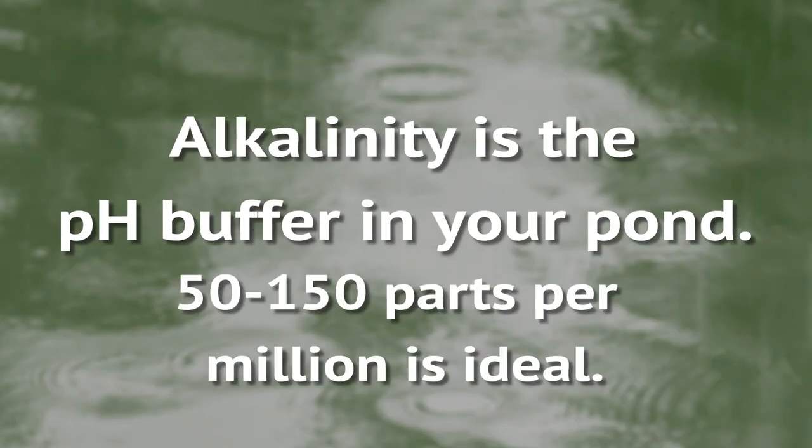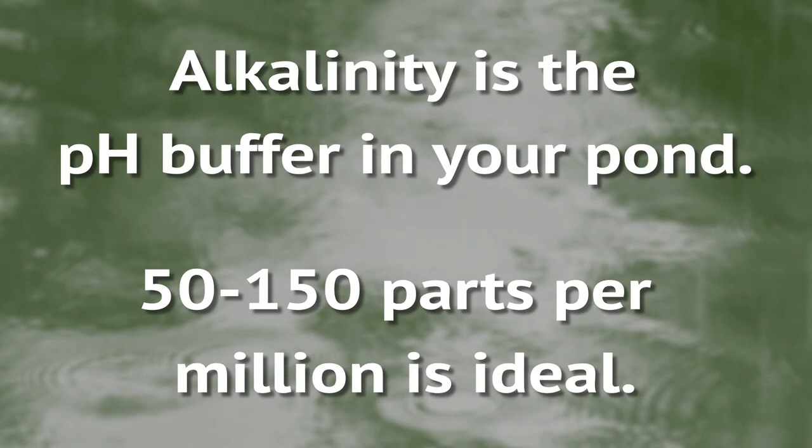Alkalinity is the pH buffer in your pond. Typically you want it between 50 and 150 parts per million, but 20 is adequate.